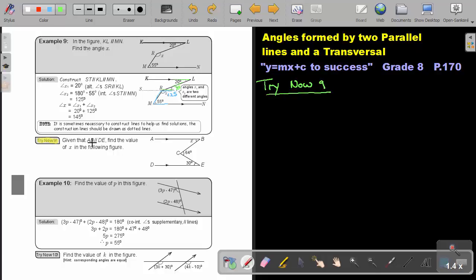Now, let's start. Given that AB is parallel to DE, find the value of X in the following figure. We have the same situation. This angle here makes it difficult to transfer the information. So, let's do exactly the same. We bring in an extra dotted line, which is parallel to AB and DE.